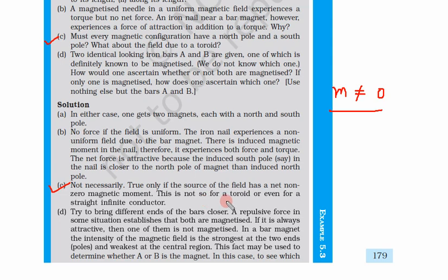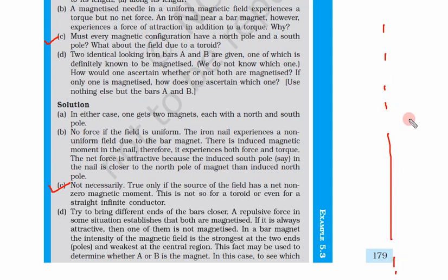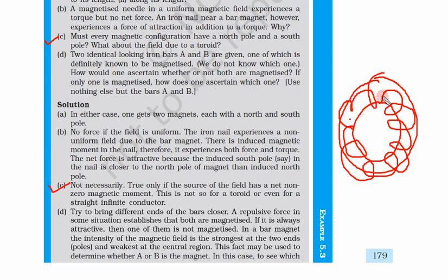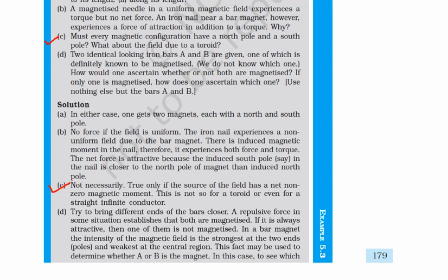What happens in the case of a toroid or even a straight infinite conductor? For an infinite straight conductor you have no ends, so there is no north pole and no south pole, but you do have a magnetic field. Similarly, in a toroid the magnetic field exists inside the structure, but there are no poles. So poles are not necessary; they are required only when the net magnetic moment vector m is not equal to zero. In these cases, vector m equals zero.